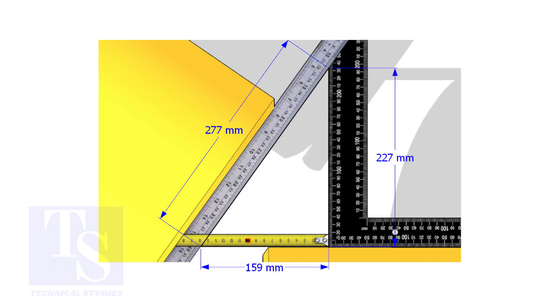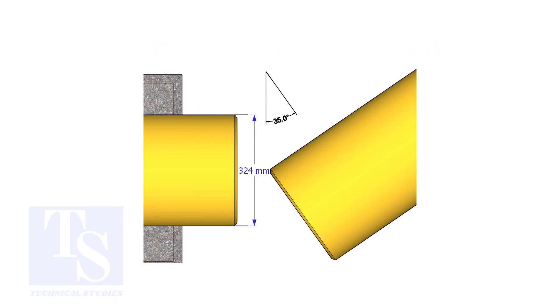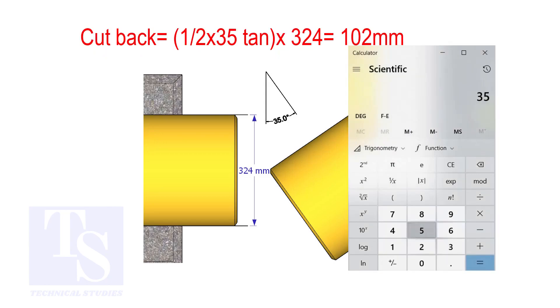How to calculate the cutback of a single cut miter. When it is a single cut, the cutback is half degree tan multiplied by the OD of the pipe. The answer is 102 millimeters.